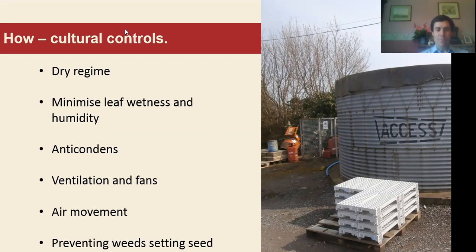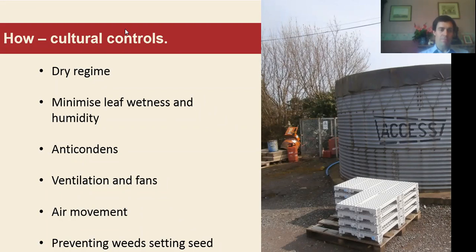Another useful technique is minimising leaf wetness, which gives the added benefit of reducing humidity within the crop. As a general rule of thumb, the longer the period of leaf wetness the higher the risk of foliar disease — that applies both indoors and outdoors. Obviously we have less control outdoors with rain, but if you can schedule your irrigation early in the morning it's much better than putting it on just before dusk, particularly for things prone to foliar diseases such as Hebes with high risk of downy mildew. Try to look at the weather and plan your irrigation across the week — get it on on a bright sunny morning to get those leaves dry and reduce humidity within the crop.